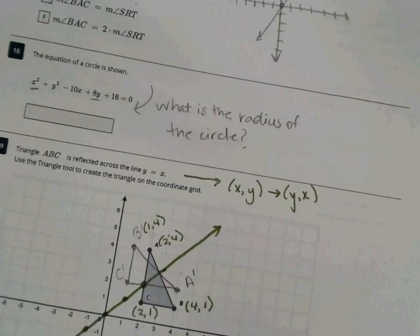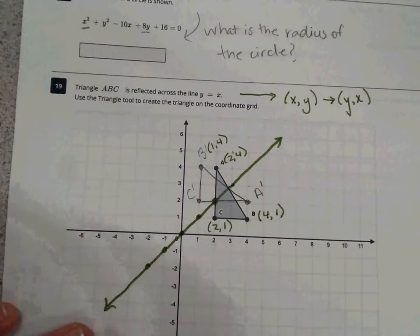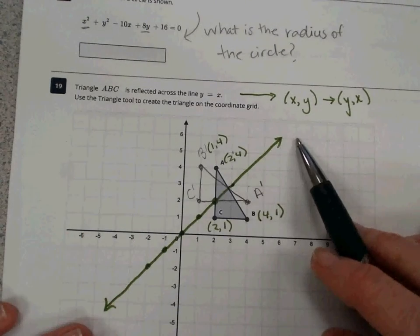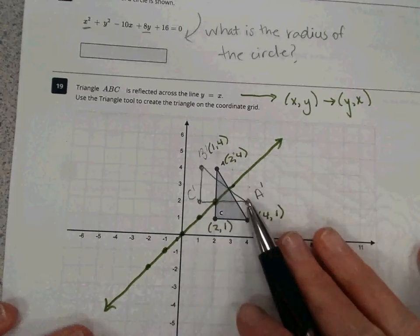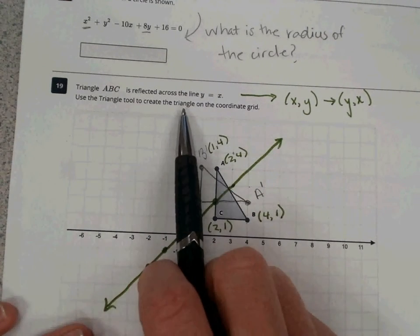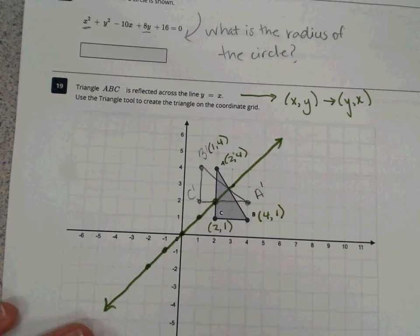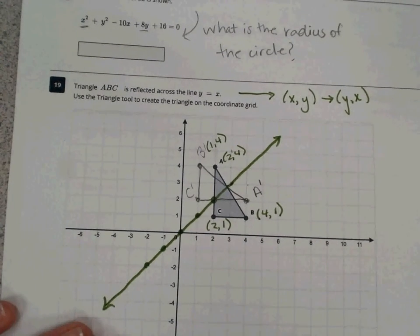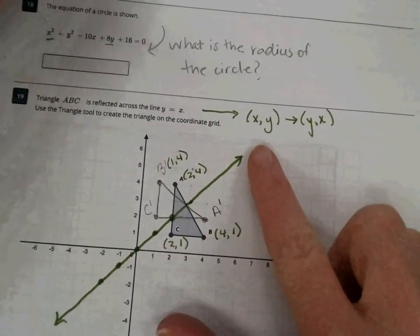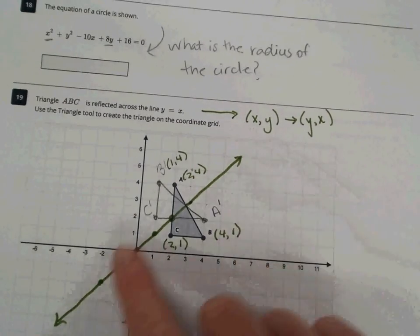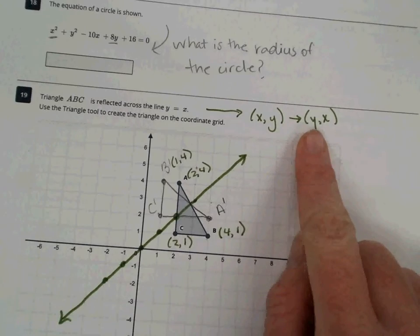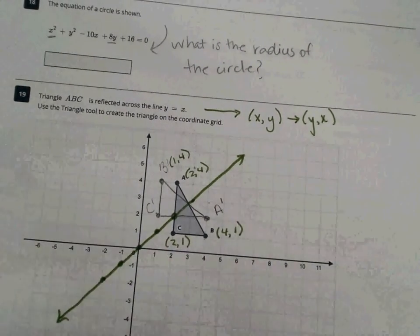So the last question asks us something we should be familiar with, which is a transformation. Triangle ABC is reflected across the line y equals x. This initially didn't have my green marker or my pencil lines on here. It says use the triangle tool to create the triangle on the coordinate grid. So in your computer, there's tools you'll be using. Now notice, recall, that when we're translating, we're doing a reflection over the line y equals x, we just switch for any given point the x and y values. So I labeled these values.